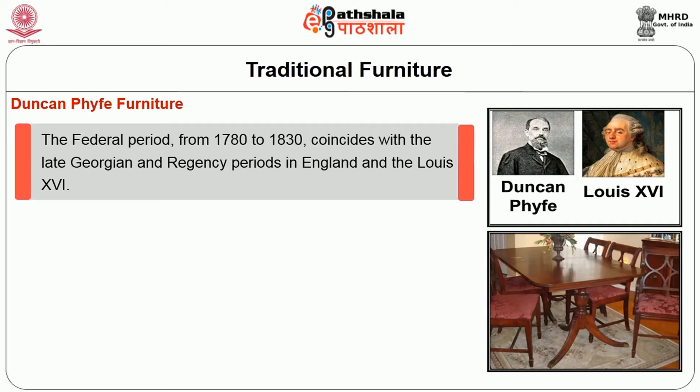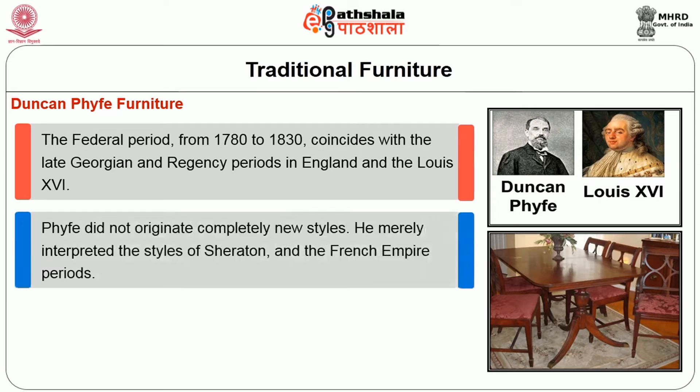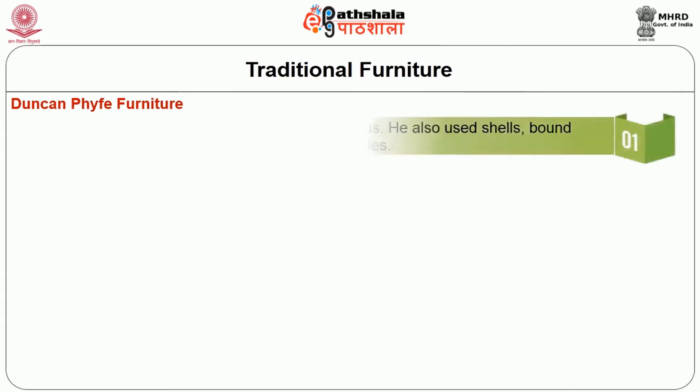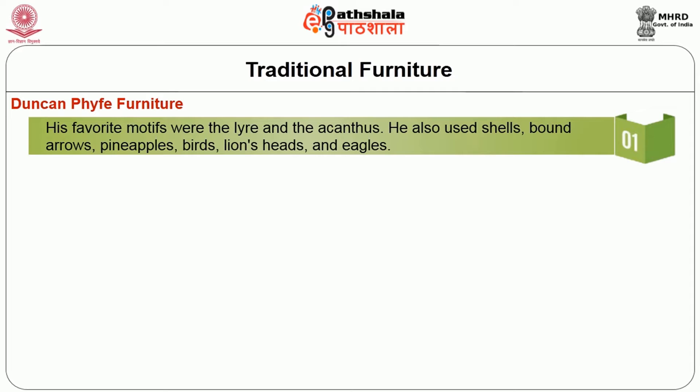Duncan Phyfe Furniture: The Federal period from 1780 to 1830 coincides with the late Georgian and Regency period in England and the Louis XVI period in France. Duncan Phyfe did not originate completely new styles; he merely interpreted the styles of Sheraton and the French Empire periods. He worked with mahogany, cherry, maple, and fruit woods, and his tables, chairs, and sofas are some of the most beautiful examples of American furniture. His favorite motifs were the lyre and acanthus; he also used shells, bound arrows, pineapples, birds, lion heads, and eagles.